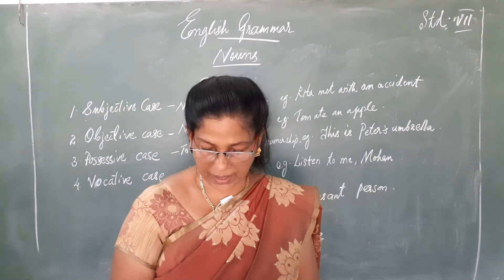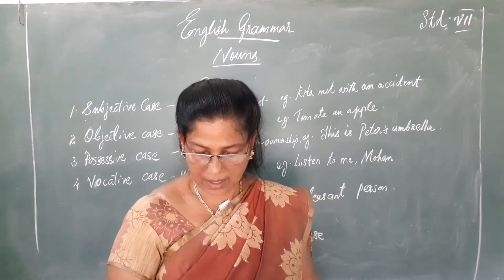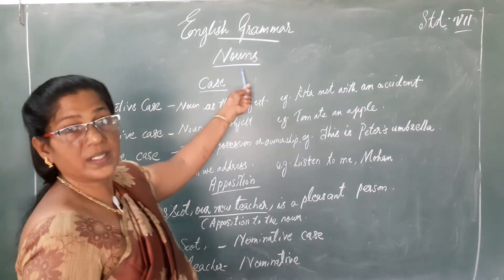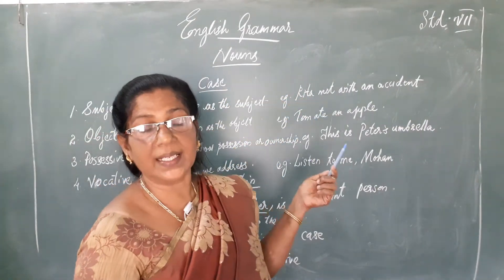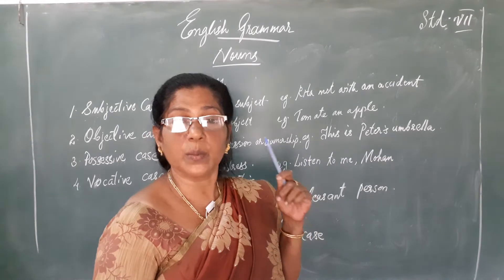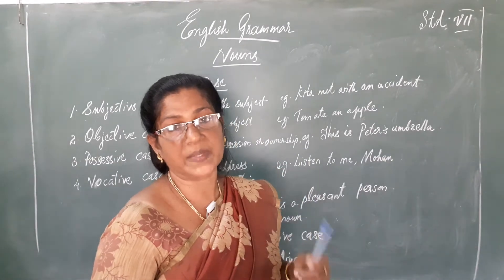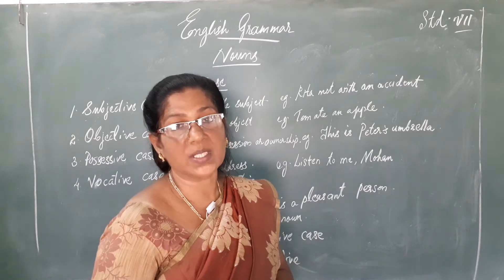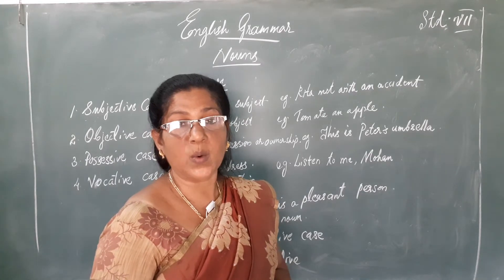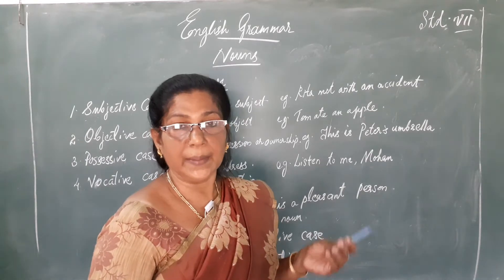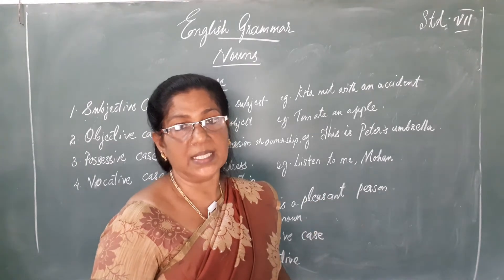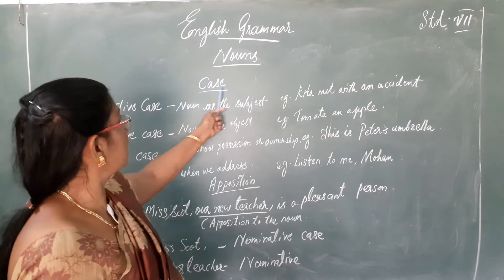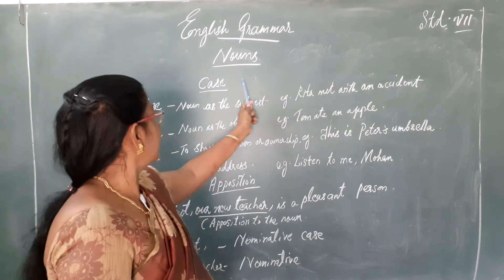Let's continue studying. That is case. Nouns — different groups we have learned. What are the different major groups? Concrete nouns and abstract nouns. Then we have studied what are the different kinds of nouns: common nouns, proper nouns, and collective nouns. Then numbers, then genders. Now we are studying about case. What is case?